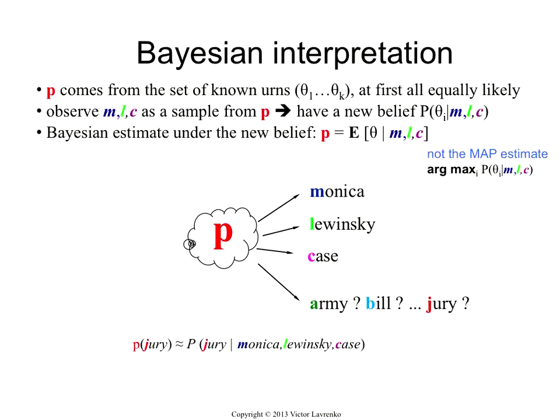Think about what we're trying to do. We have this unknown distribution, and we're trying to estimate probabilities from it based on the samples that we pulled out of that distribution. What we can do is assume that this P — we don't know what it is — but we can say it's one out of many possible distributions. So I have a dark room filled with many of these urns, and I know that my sequence was drawn from one of the urns, but I just don't know which one.